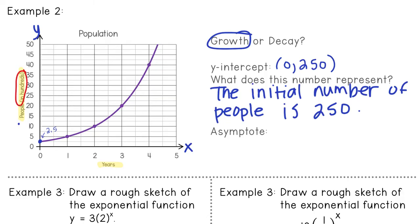Then our asymptote, like before, you guessed it, is going to be y equals zero.